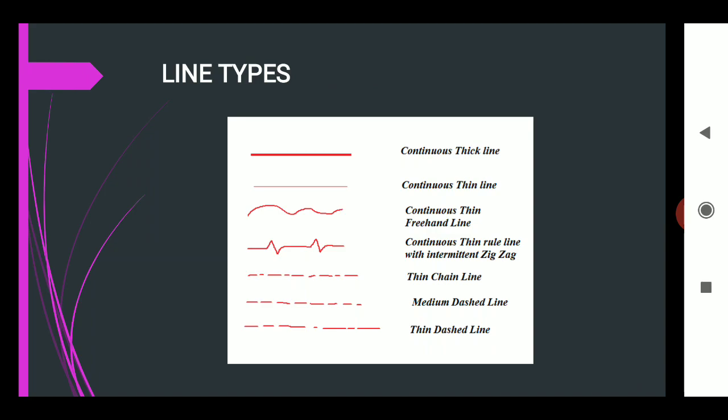The next one is the different types of lines. Normally the different types of lines are continuous thick line, continuous thin line, continuous thin freehand, continuous thin ruled line with intermediate zigzag, thin chain line, medium dashed line, and thin dashed line.